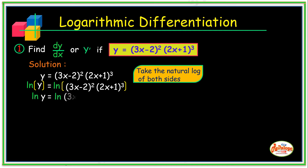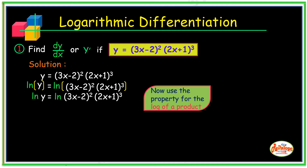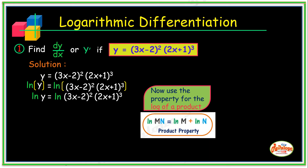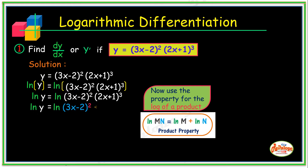Rewriting the given, we have ln(y) equal to ln of (3x - 2)² times (2x + 1)³. Taking notice of the right-hand member, we apply the property for the logarithm of a product, wherein ln(mn) = ln(m) + ln(n). So we write ln(y) equal to ln(3x - 2)² plus ln(2x + 1)³.